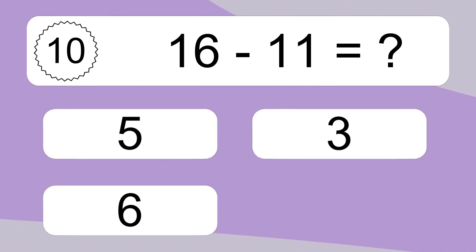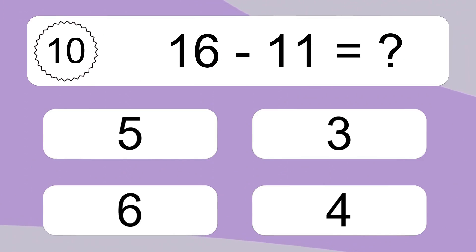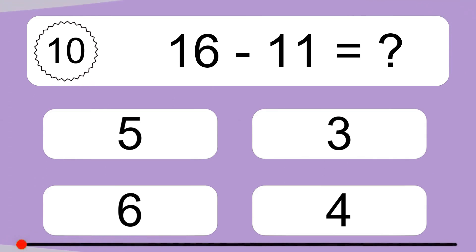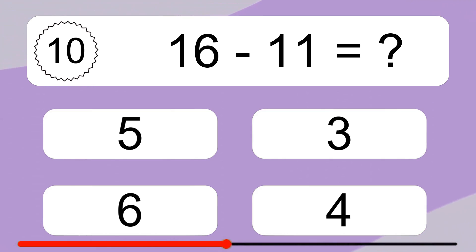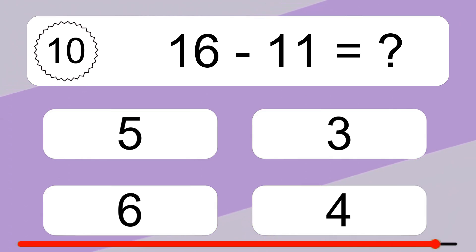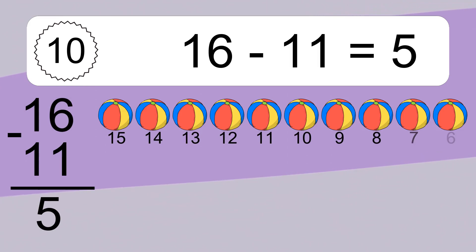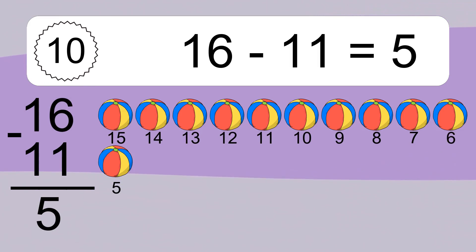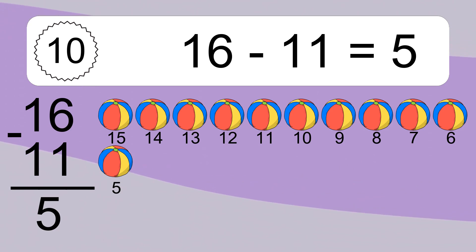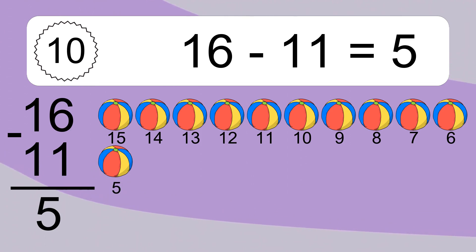16 minus 11 equals what? 16 minus 11 equals 5. Let's count it. 15, 14, 13, 12, 11, 10, 9, 8, 7, 6.